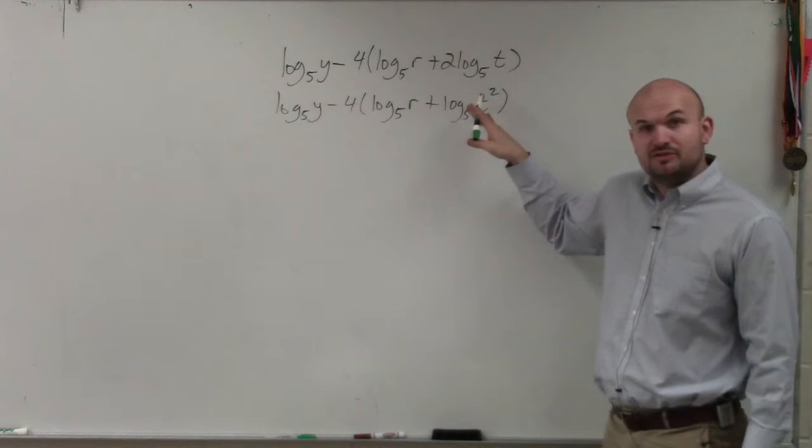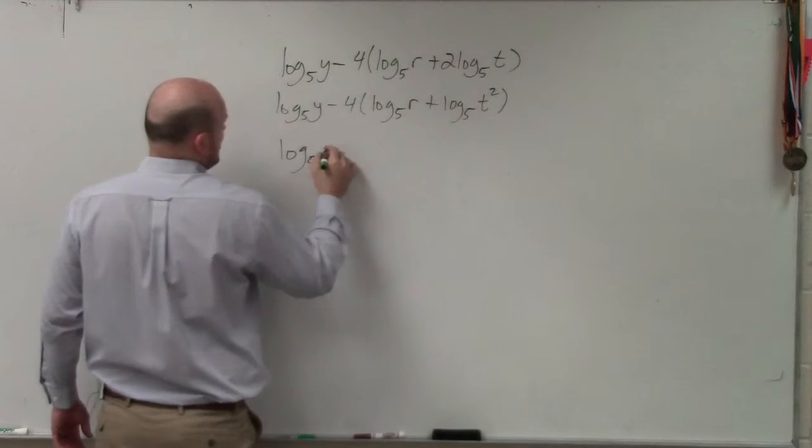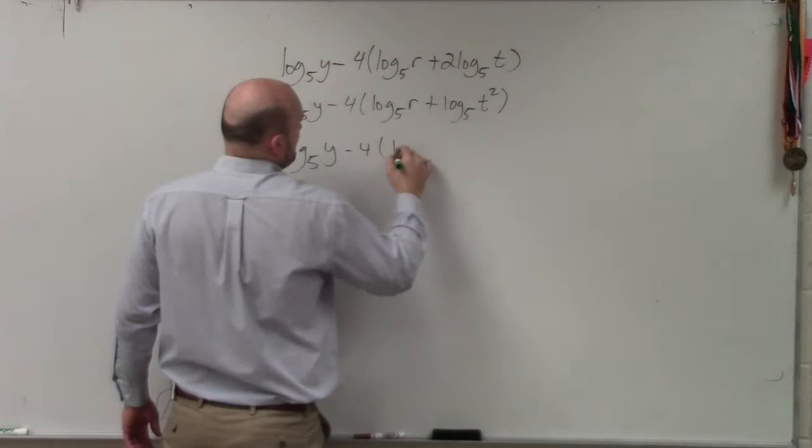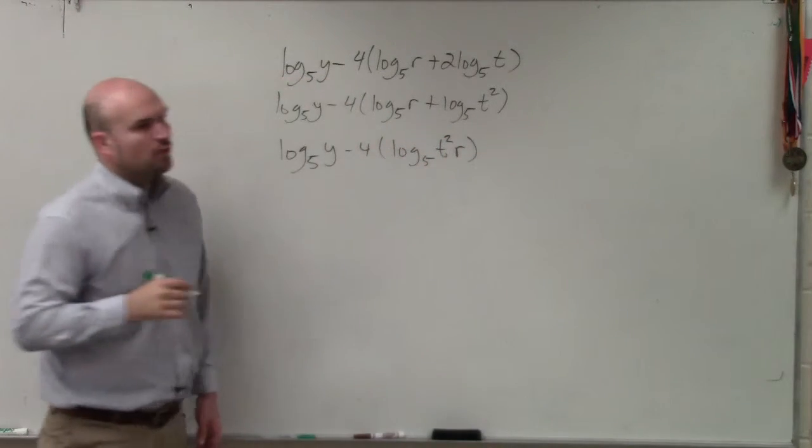Now I see that I have the addition of two logarithms, which I can rewrite as the product of one logarithm. So I can write log base 5 minus log base 5 of t squared r. It doesn't really matter the order.